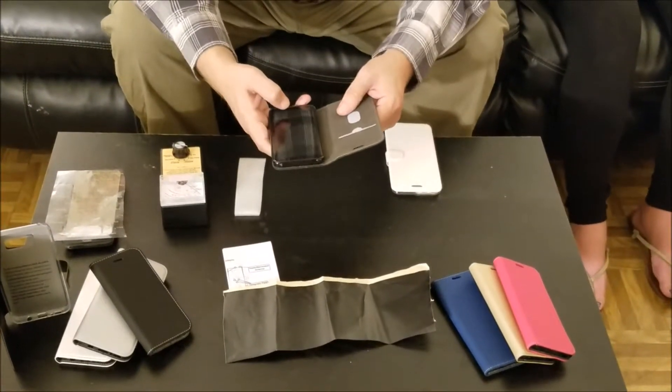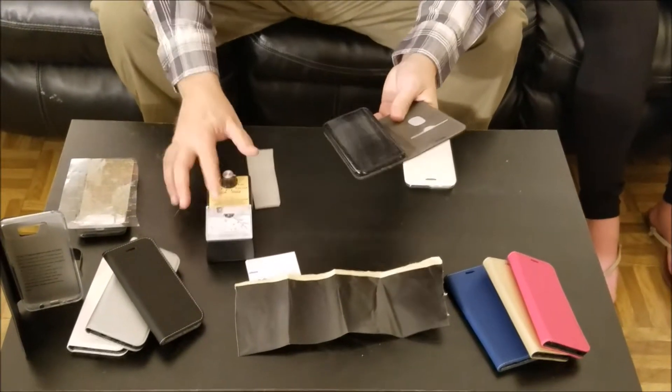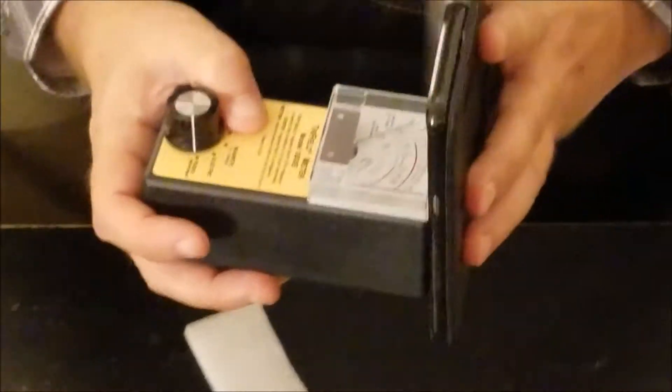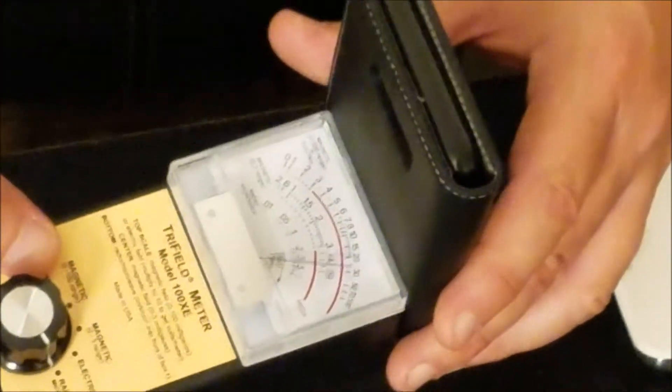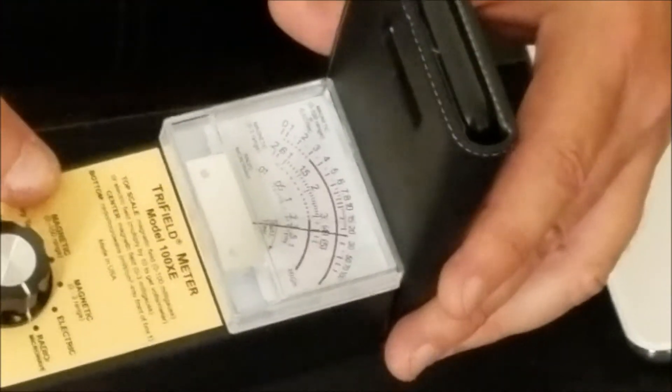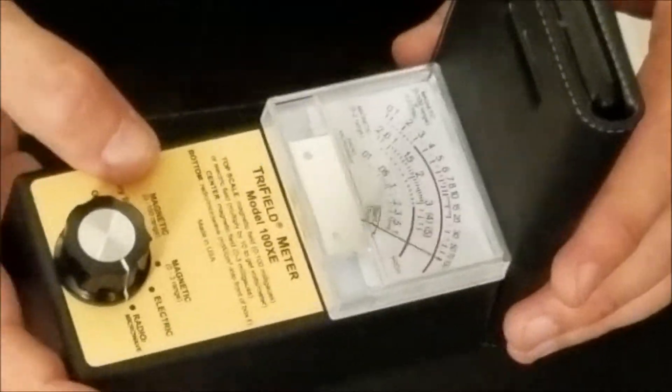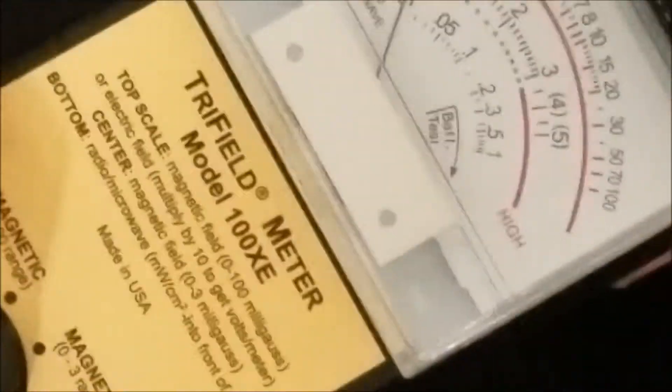Let's go ahead and demonstrate. As we have the call still going, we're going to turn on our tri-field meter. We're going to put this over to the electric microwave setting. We're just going to test the radiation that's coming from the front and back of the phone. You can see that from the back, that's really pegging from the back of the phone.